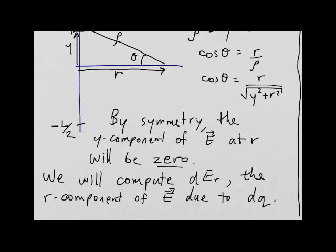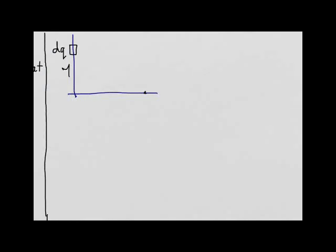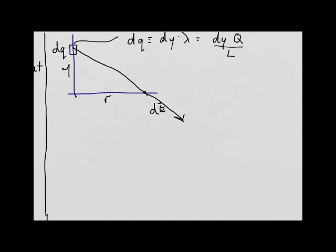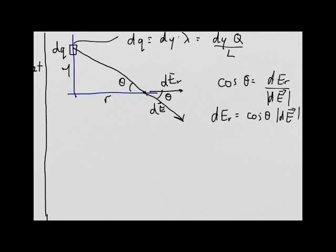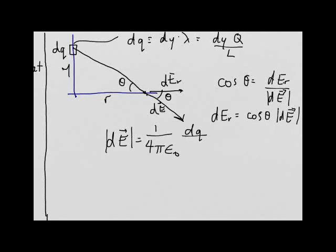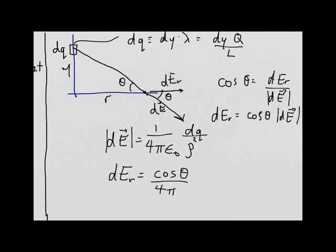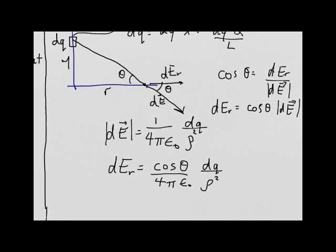We compute dEr, the r-component of the electric field due to charge element dq, where dq equals dy times the linear charge density, which is dy times Q over L. The r-component dEr equals cos theta times dE, and dE from Coulomb's law is 1 over 4 pi epsilon naught times dq over rho squared. Multiplying by cos theta gives dEr equals cos theta over 4 pi epsilon naught times dq over rho squared.